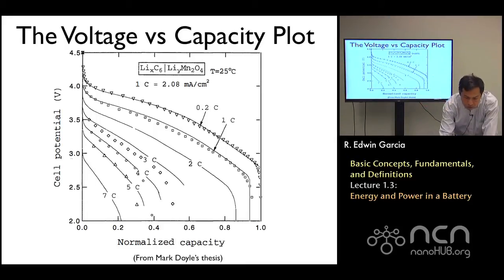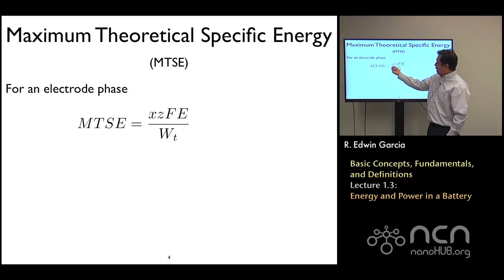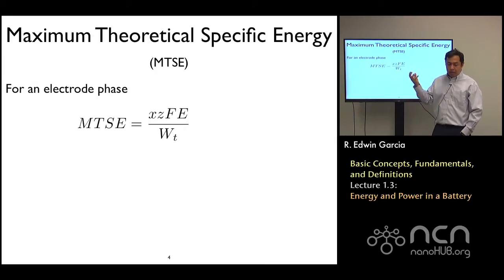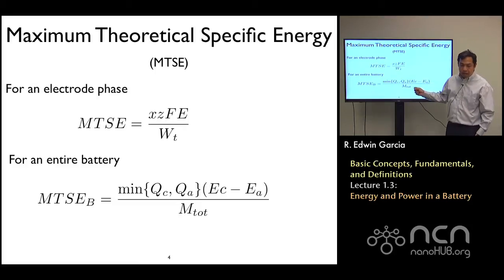How much energy in theory you can totally extract, that's another quantity called the Maximum Theoretical Specific Energy, or MTSC. MTSC is defined effectively as X, the amount of charge we have already extracted, times Z times F, where E is the voltage of the system divided by the molecular weight. For the entire battery, the anode will have an MTSC and the cathode will have an MTSC. What you really want is to figure out which of both electrodes will deliver the smallest amount of charge.